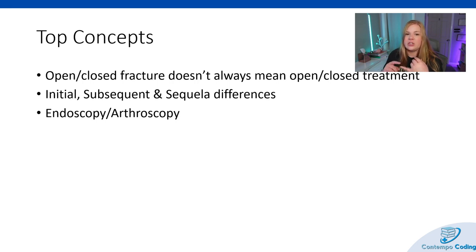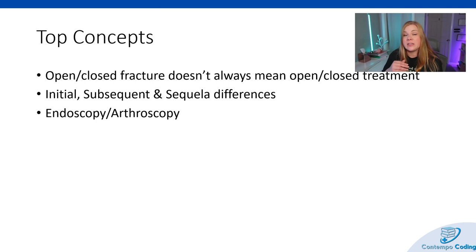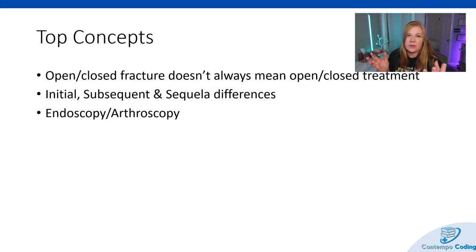Closed treatment and open treatment are different. Closed treatment specifically means the fracture site is not surgically open — it's not exposed to the external environment and not directly visualized by the surgeon. This terminology describes procedures that treat fractures by three methods: with manipulation, without manipulation, or with or without traction. Open treatment is used when the fractured bone is surgically open, exposed to the external environment, and the bone is visualized — and they might use internal fixation. Or the bone may be opened remote from the fracture site to insert a nail across it. There's also percutaneous skeletal fixation — a fracture treatment that isn't really open or closed. In this procedure, fracture fragments are not visualized, but fixation such as pins and external hardware is placed across the fracture site, usually done under X-ray imaging.